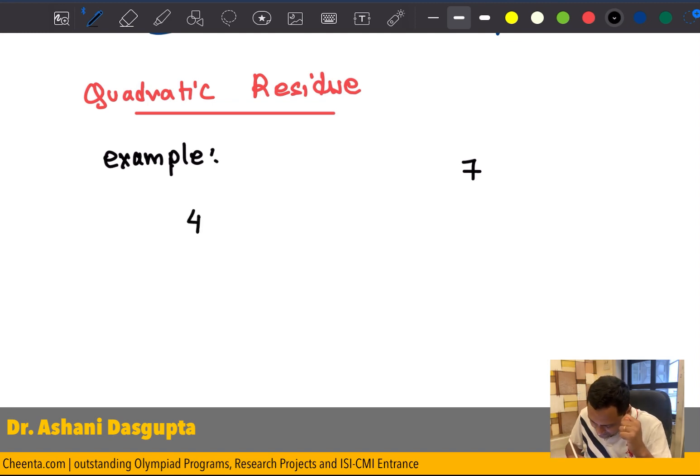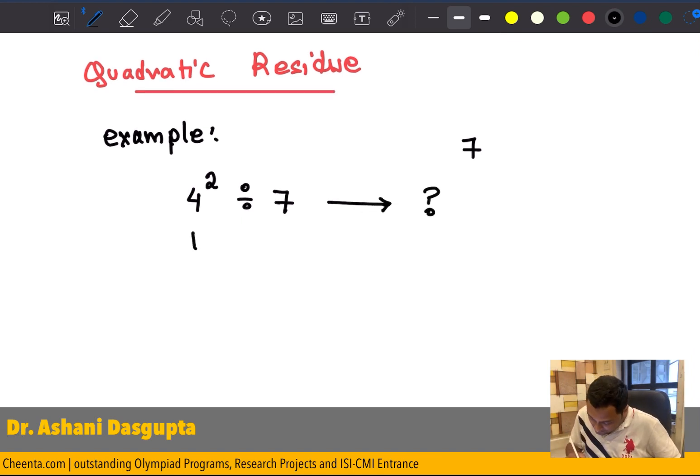For example, if I take the number 4 and make a square of it and divide that by 7, what is the remainder? So, let's do that. This is 16. And if I divide 16 by 7, the remainder is 2.